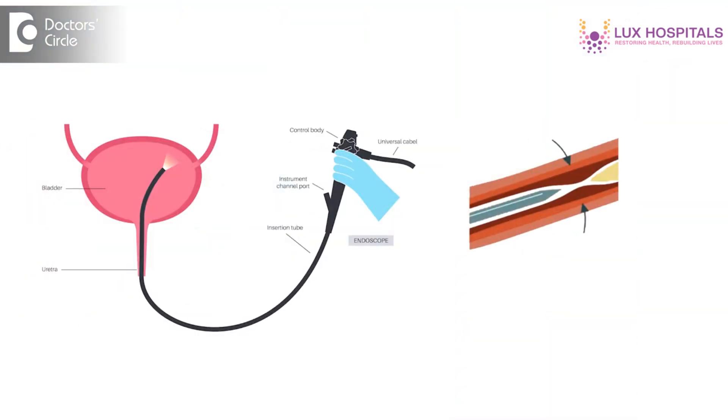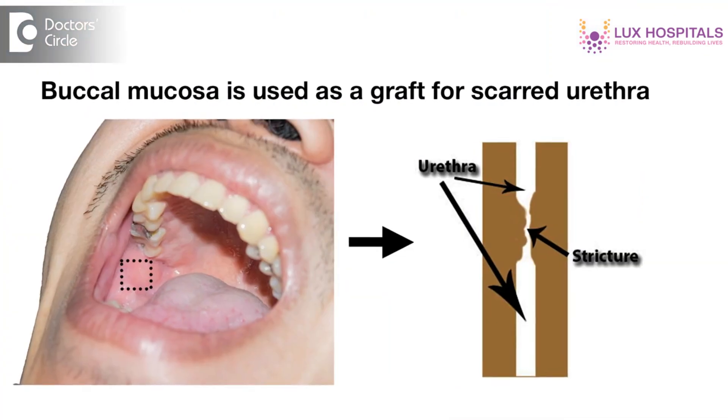After diagnosing the urethral stricture, we have various treatment options depending on the age of the patient, the length of the stricture, and how severely the patient is suffering. Options include either an endoscopic approach or a surgical option called urethroplasty. Whenever the stricture is small and not significantly affecting the patient, we can initially go for an endoscopic procedure called visual internal urethrotomy or endoscopic internal urethrotomy. If the patient is very young and needs to get rid of symptoms, the most ideal procedure is buccal mucosal graft urethroplasty.